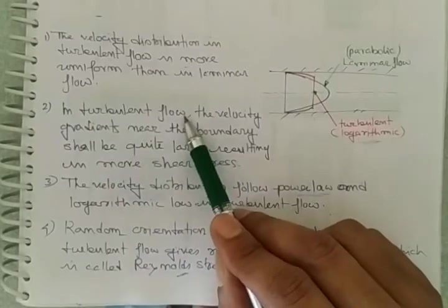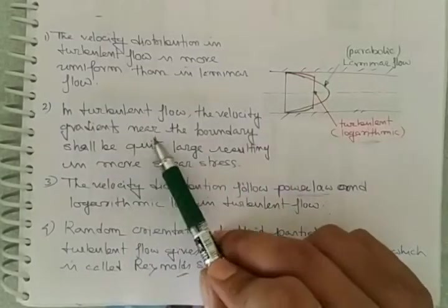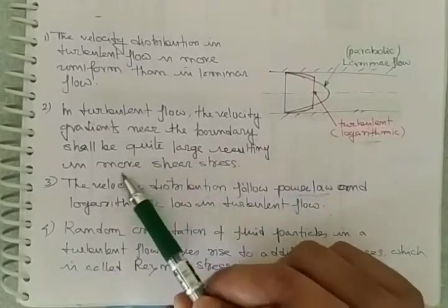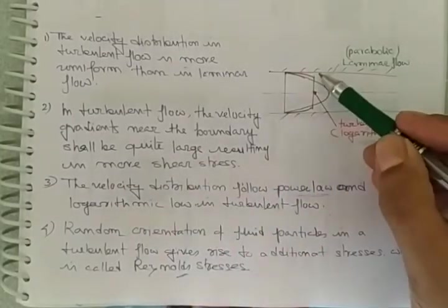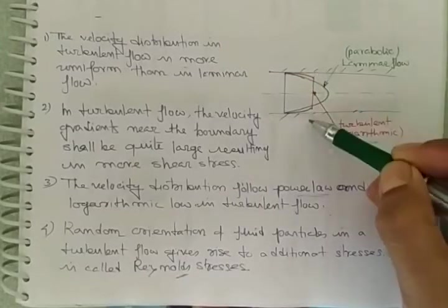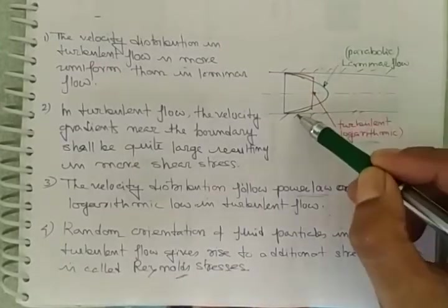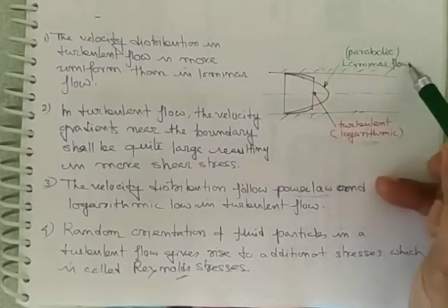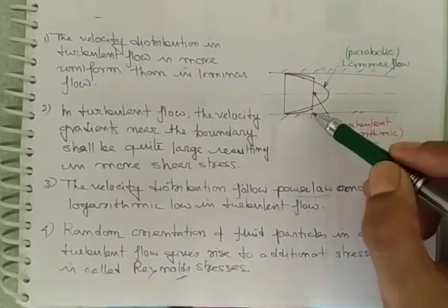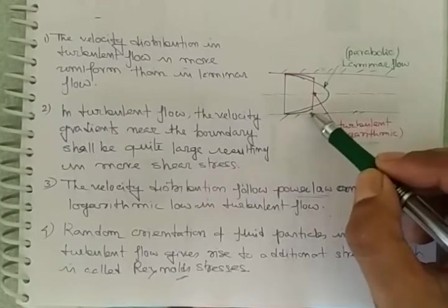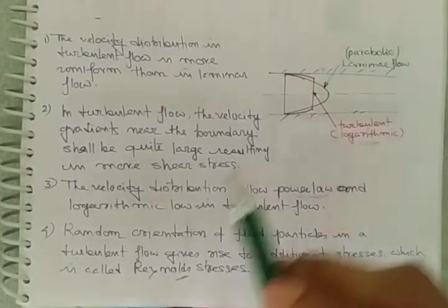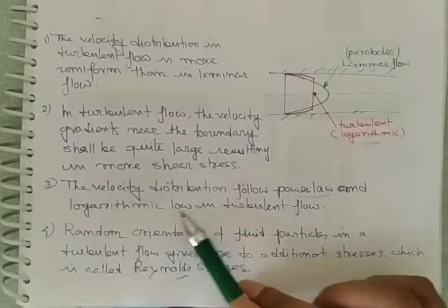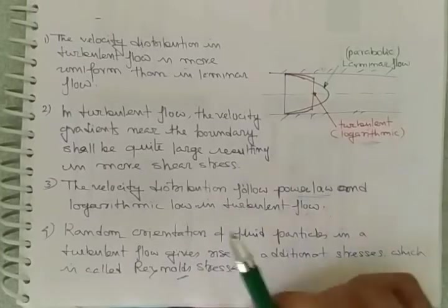In the turbulent flow, the velocity gradients near the boundary shall be quite large resulting in more shear stress. So near the boundaries in these two sections, shear stress is more as compared to laminar flow. Hence, the velocity gradient is also large. Velocity distribution follows power law or logarithmic law for turbulent flow.